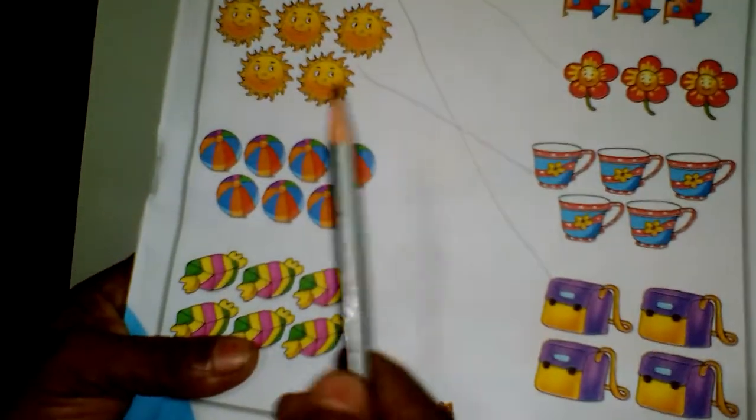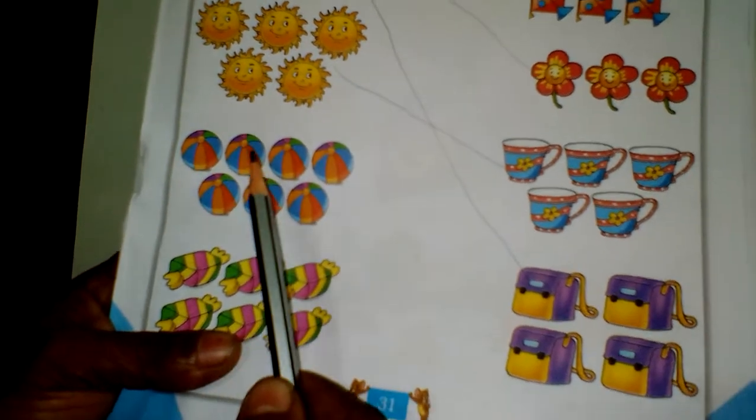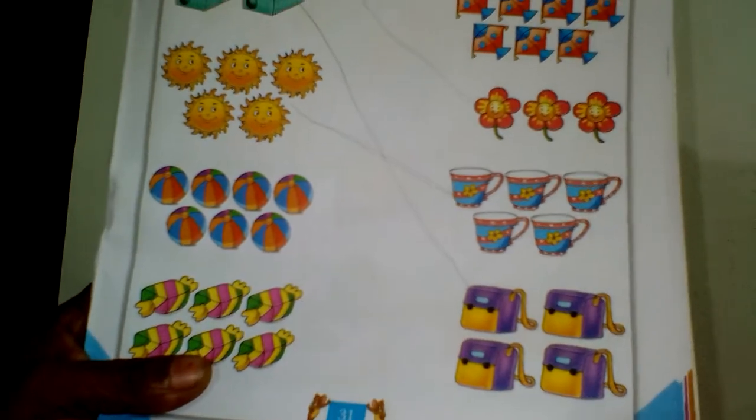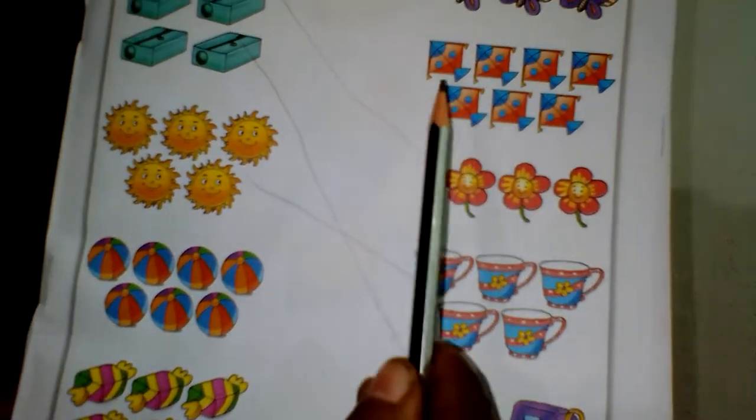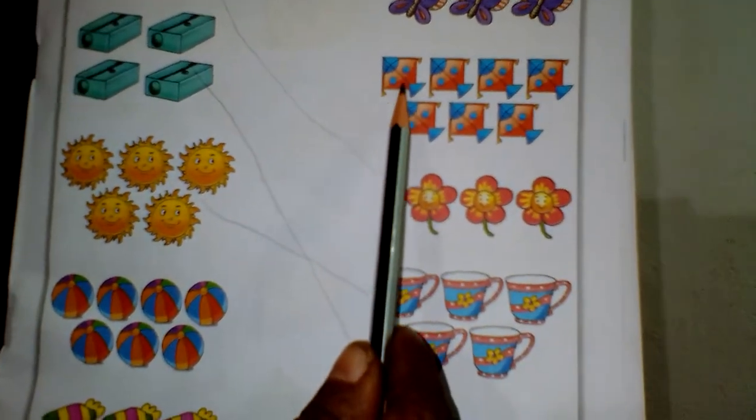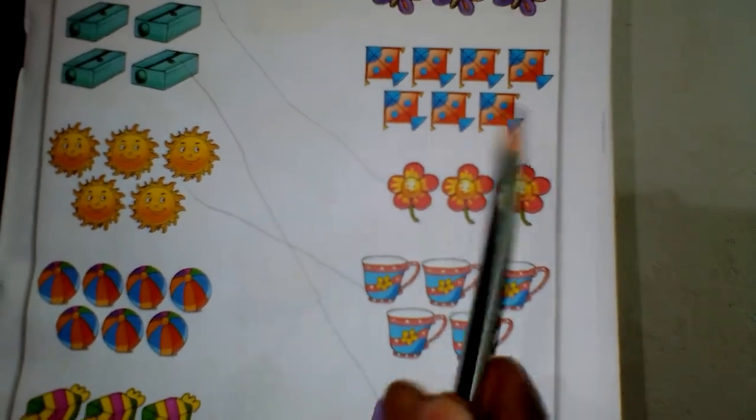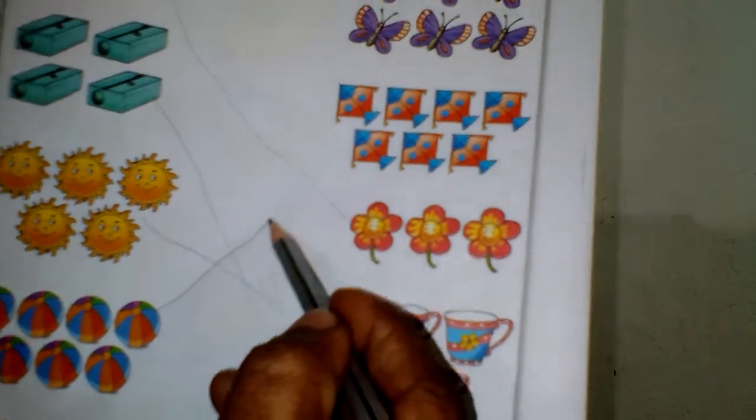How many balls are there? Count it. One, two, three, four, five, six, seven. Where is seven objects now? These are kites. Count it. One, two, three, four, five, six, seven. Because draw the line.